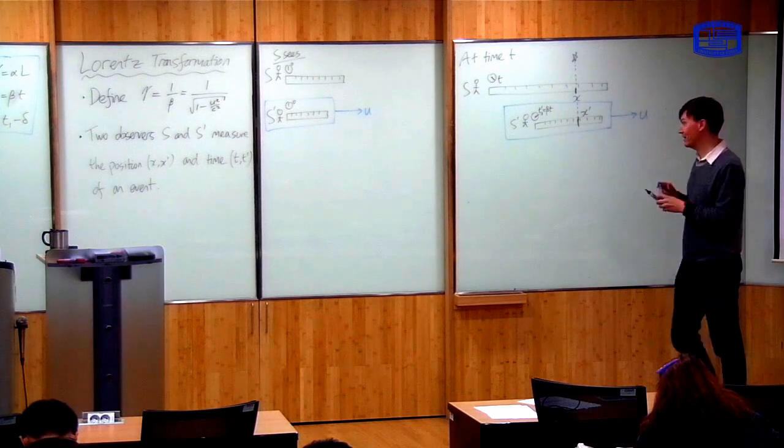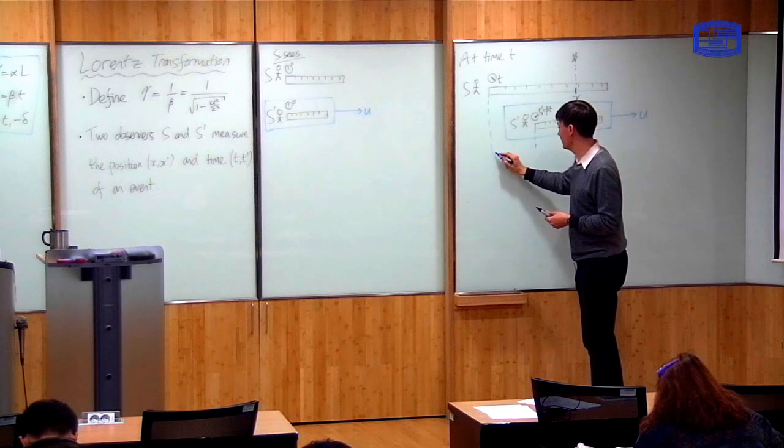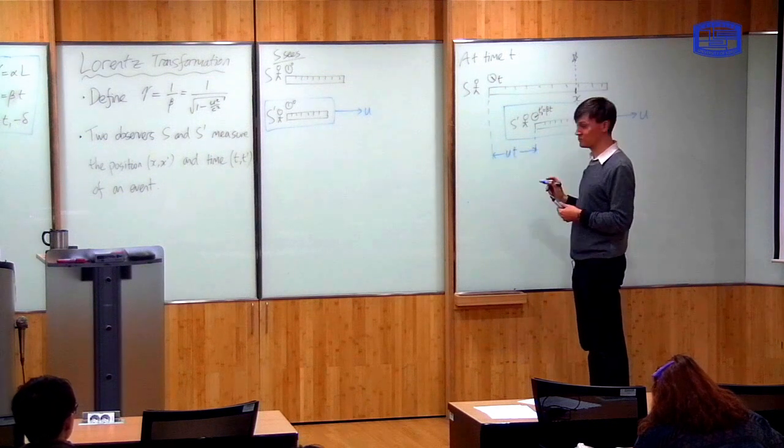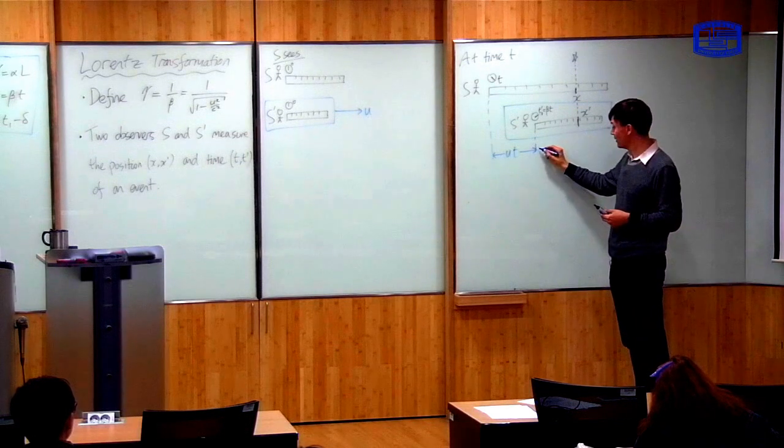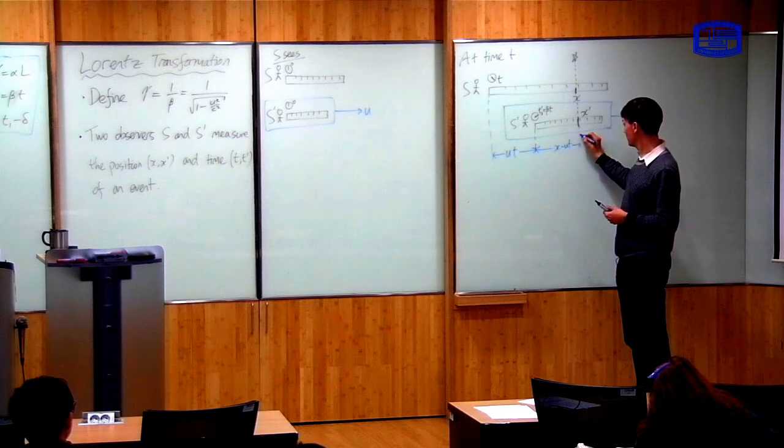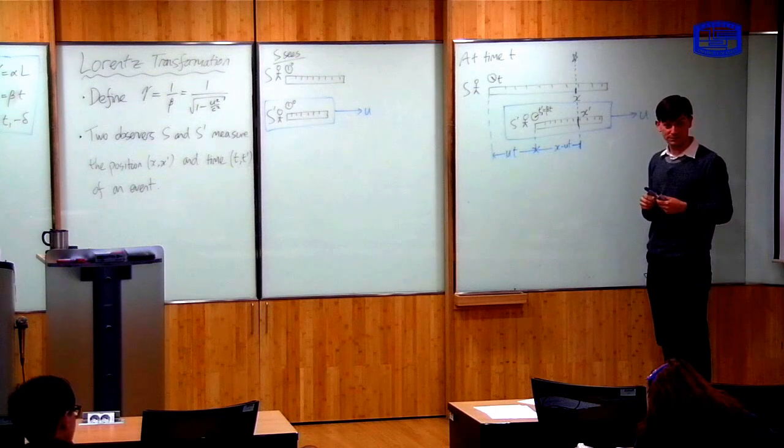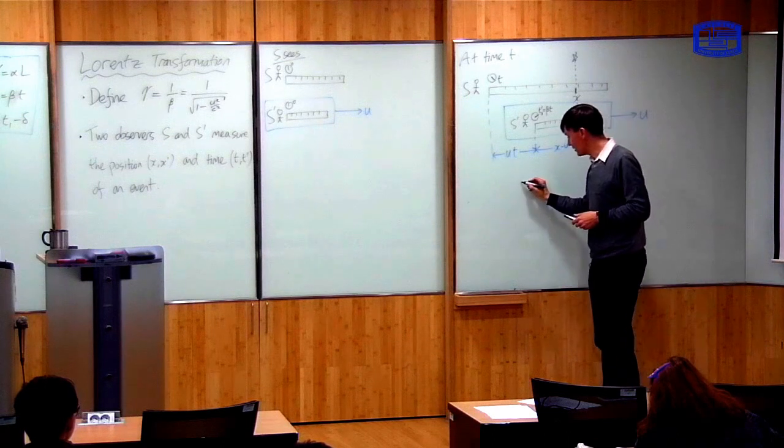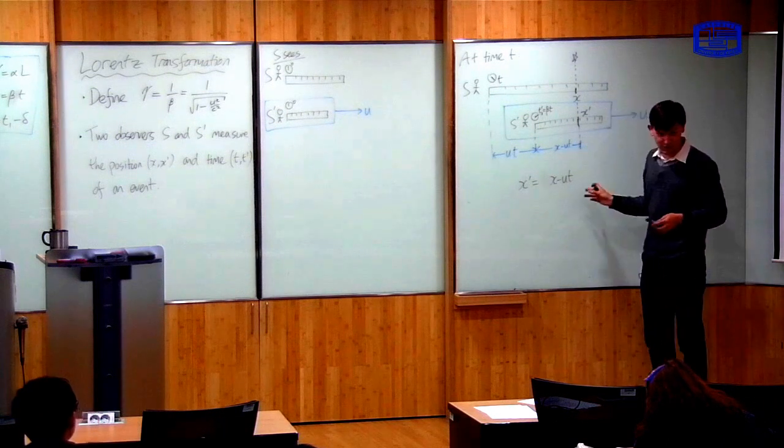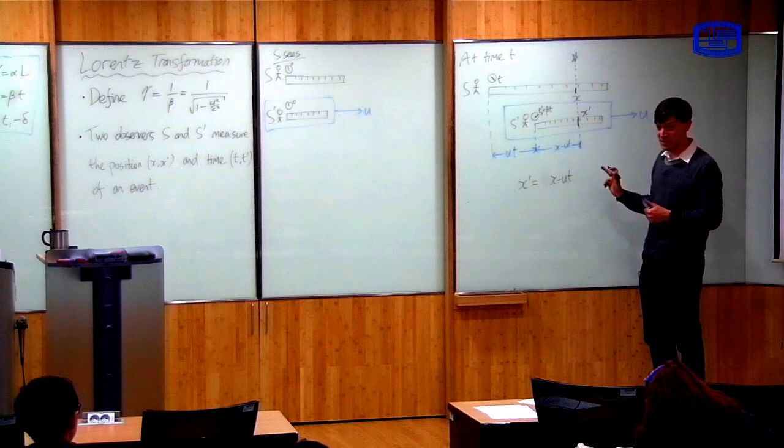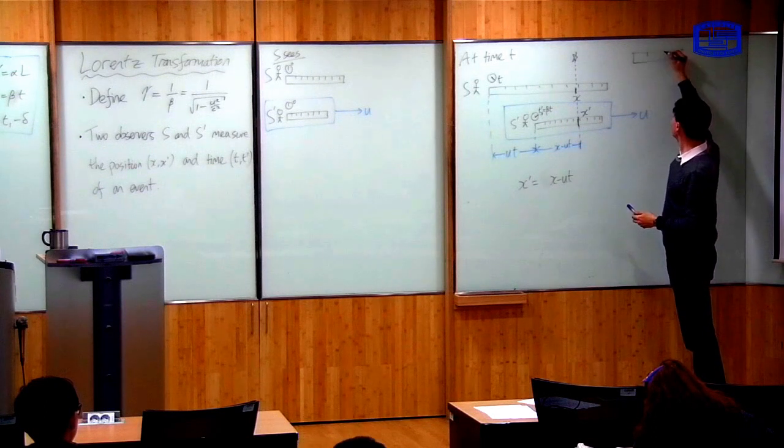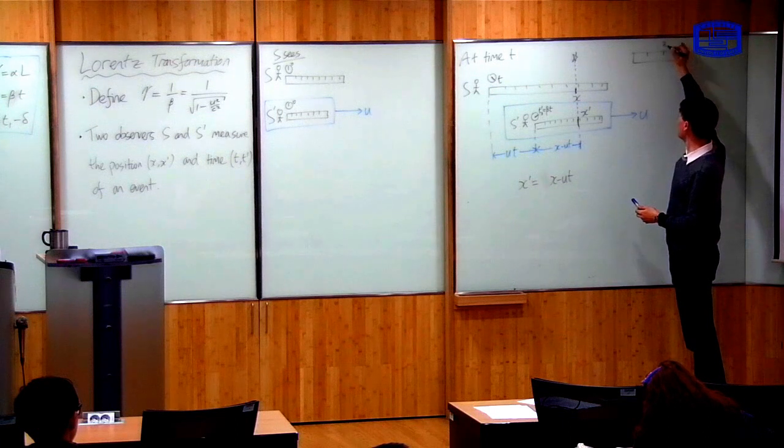So first of all, what is x prime? Well, the distance between the edges of the ruler here is equal to the speed at which he travels, which is u, times the time for which he travels, which is t. So this distance here is ut. So this distance here is, therefore, position x minus ut. So you might think, therefore, comparing these two, that you'll get x prime is equal to x minus ut. Now that's what the Galilean transformation thinks it is, but that's not right, because the ruler is length-contracted.